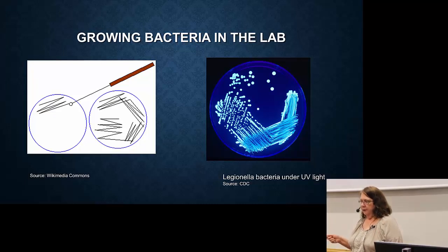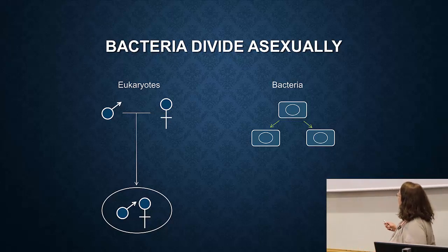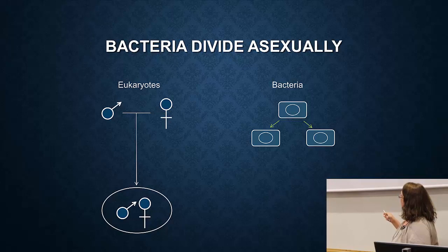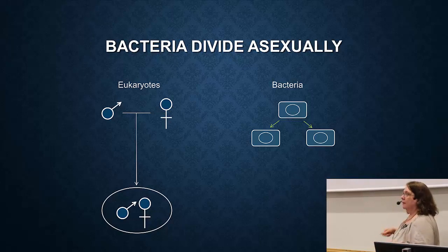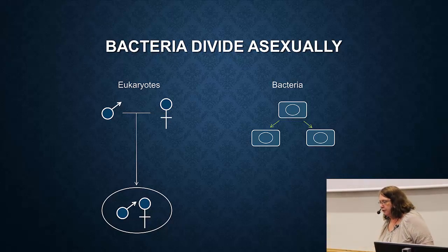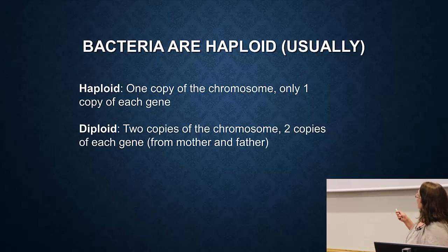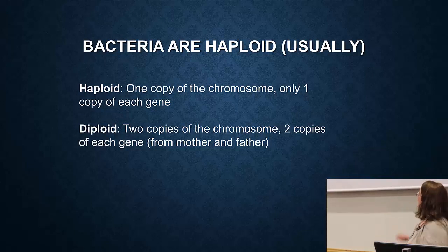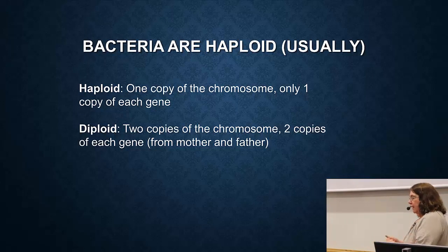Bacteria divide asexually. Eukaryotes like people require a sexual phase — offspring are a mixture of genes from both parents. Bacteria don't have this; they basically are clones that divide in half, and every clone is identical. In addition, bacteria are haploid, meaning there is only one copy of the chromosome and therefore one copy of every gene. In contrast, diploid organisms like you have two copies of the chromosome and two copies of every gene — one from your mother and one from your father.